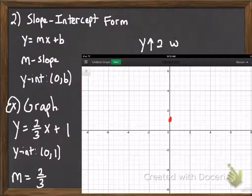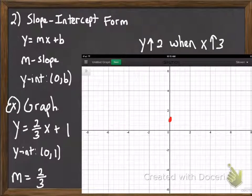Slope is 2 thirds. Now remember, slope is the change in y over the change in x. So positive 2 means y is going to go up by 2 when x goes up by 3.